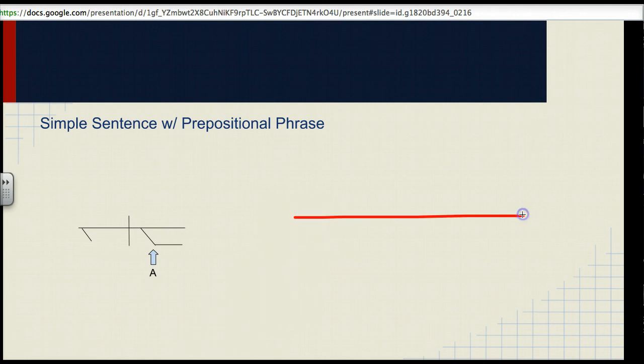Okay, so to diagram an indirect object, we're going to do something similar to what a prepositional phrase looks like. Let's go ahead and set up our sentence. We'll choose our subject, he, threw, and we'll say our direct object is a ball. Okay, so to diagram an indirect object, basically what we would do is we would almost act as if they were the recipient of, or the subject of a prepositional phrase.